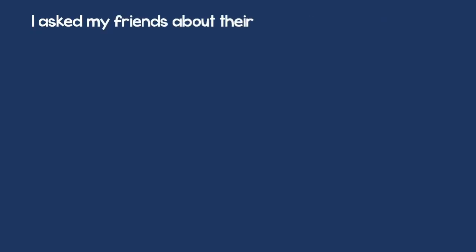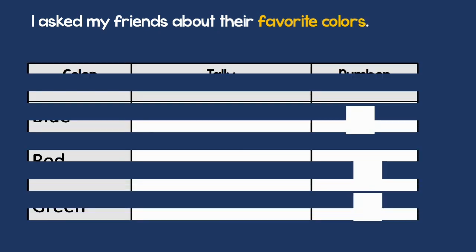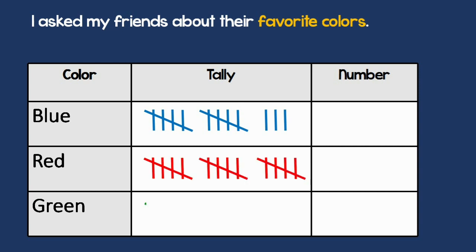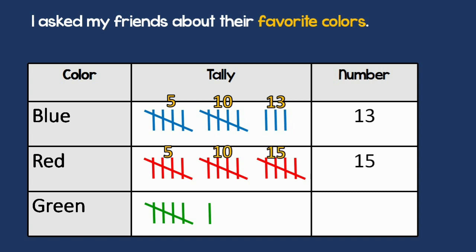I asked my friends about their favorite colors and I made this tally chart. Don't forget, we count the groups of five by skip counting by five. Look at the blue ones — I will count five, ten, and three more: thirteen. So I have thirteen blue. Then five, ten, fifteen — exactly fifteen. And five and one more — that's six.